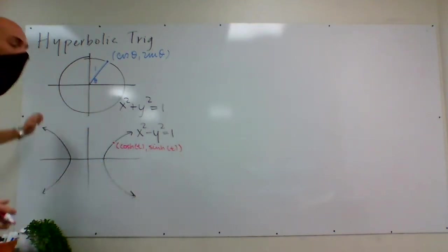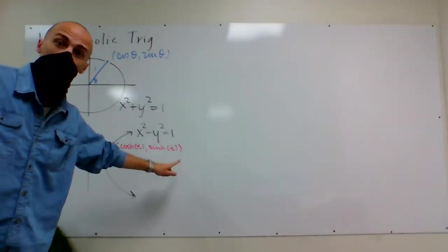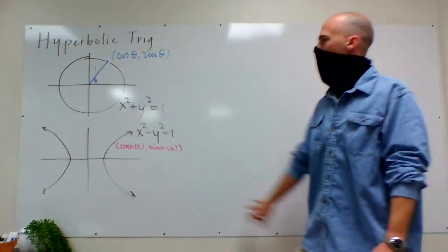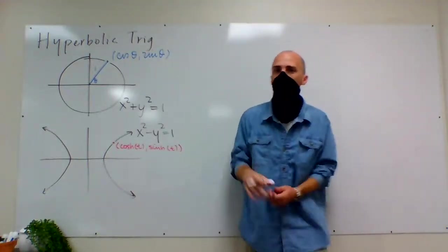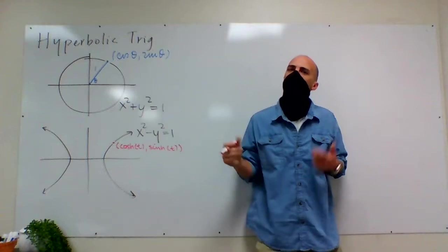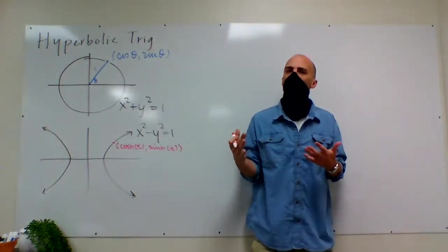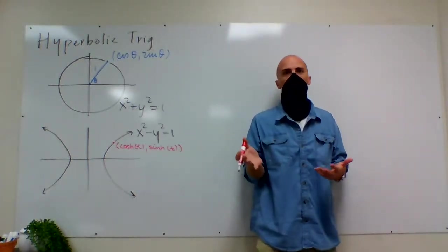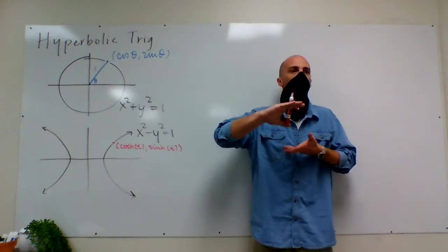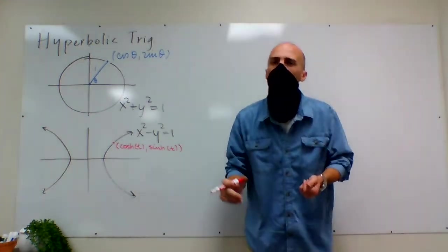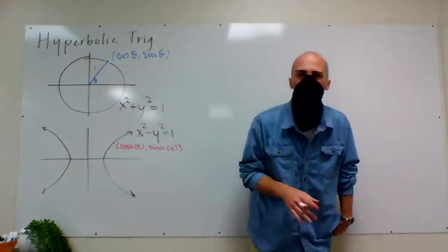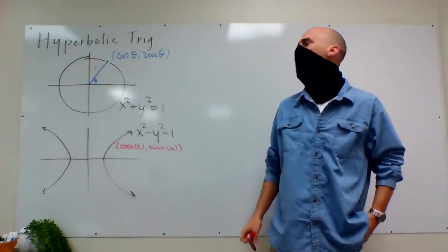I'll be calling them cosh and sinh the rest of the way through. Some people call it cosh — I first heard it called cosh, so I just call it cosh. There is also tanh, like hyperbolic tangent, which would be hyperbolic sine divided by hyperbolic cosine. There's also hyperbolic secant, cosecant, cotangent, and those would all be exactly what you'd expect.